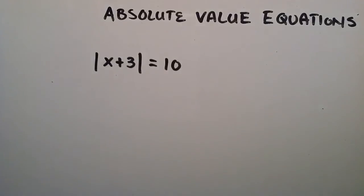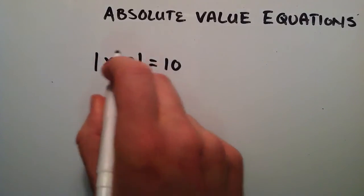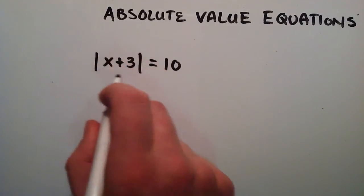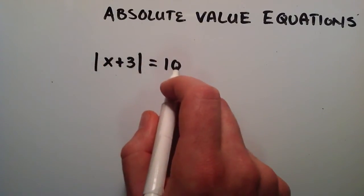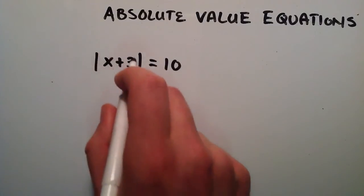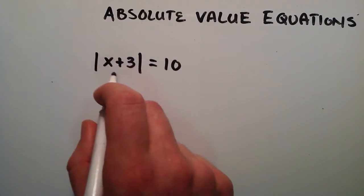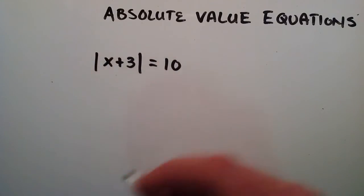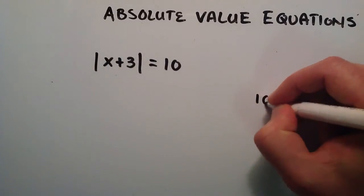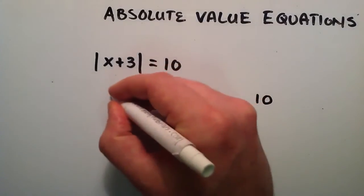If you think about what I just said, we need some positive value or some negative value, take the absolute value of that and it has to equal 10. So basically, we can make this work if we have either a positive 10 or a negative 10 inside these absolute value bars. Let's go ahead and just write that down, we can have a positive 10 or a negative 10.